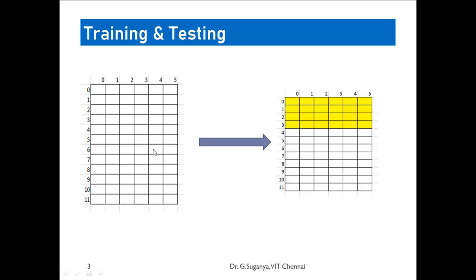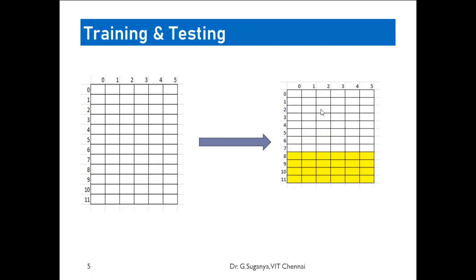Folds represents the number of partitions, as simple as that. Now, I have divided and I have shown you like first four columns will stand for the first fold, second fold and then third fold.